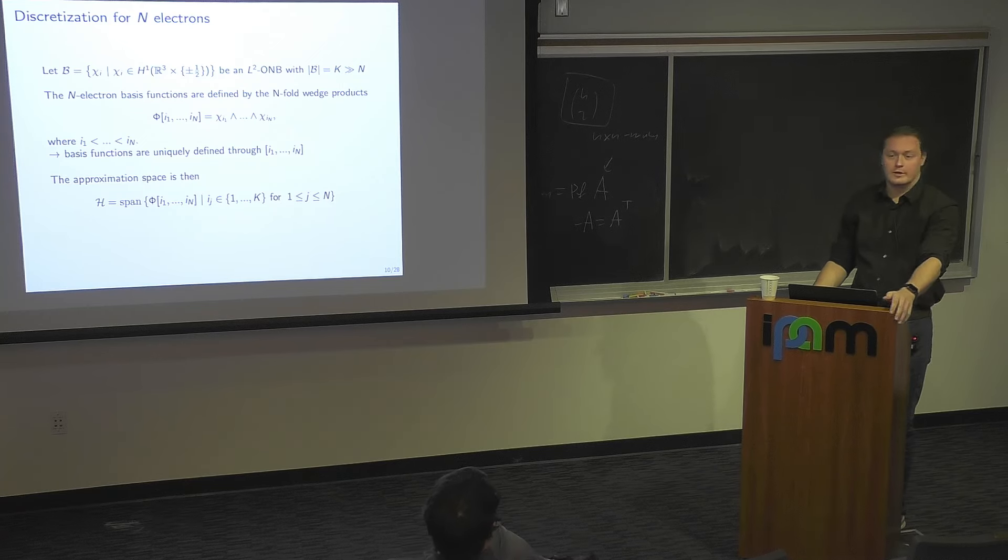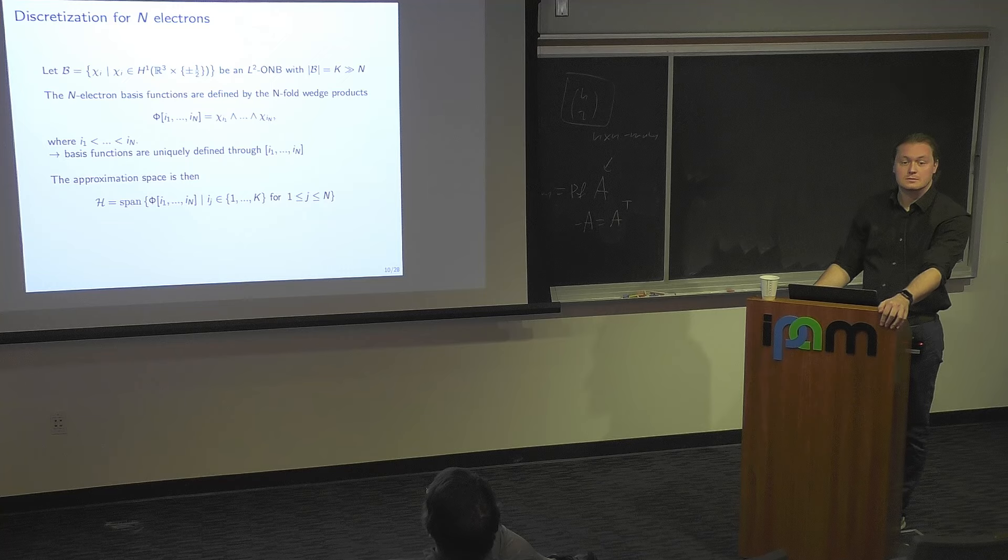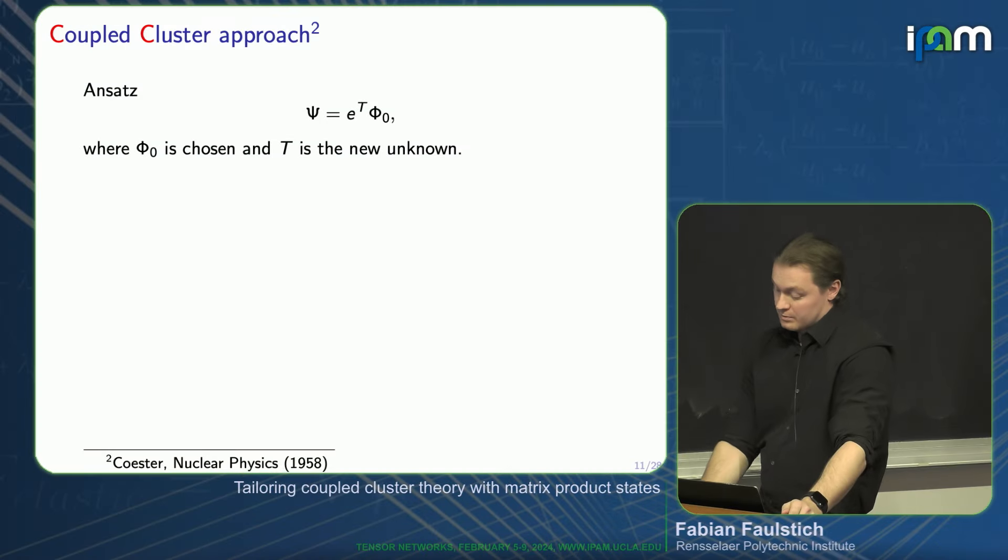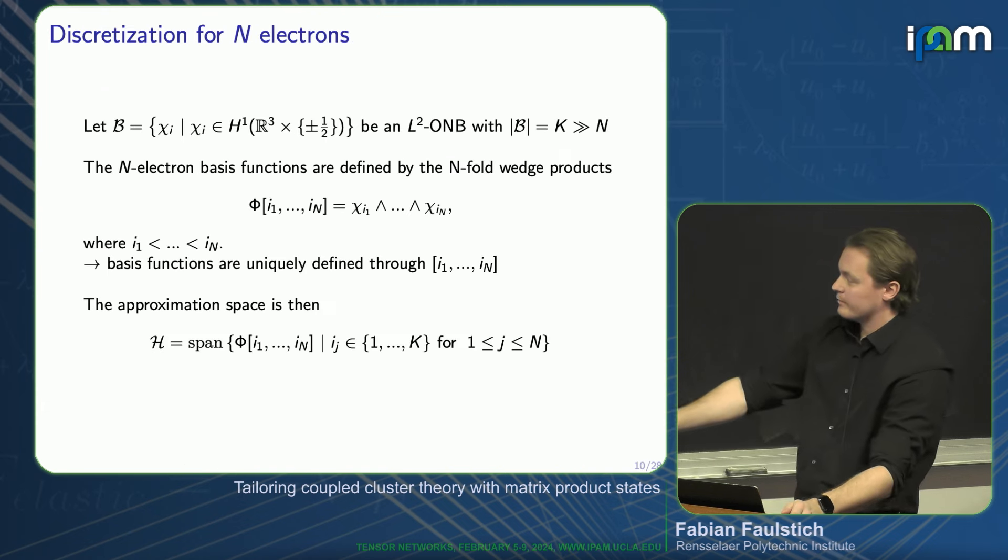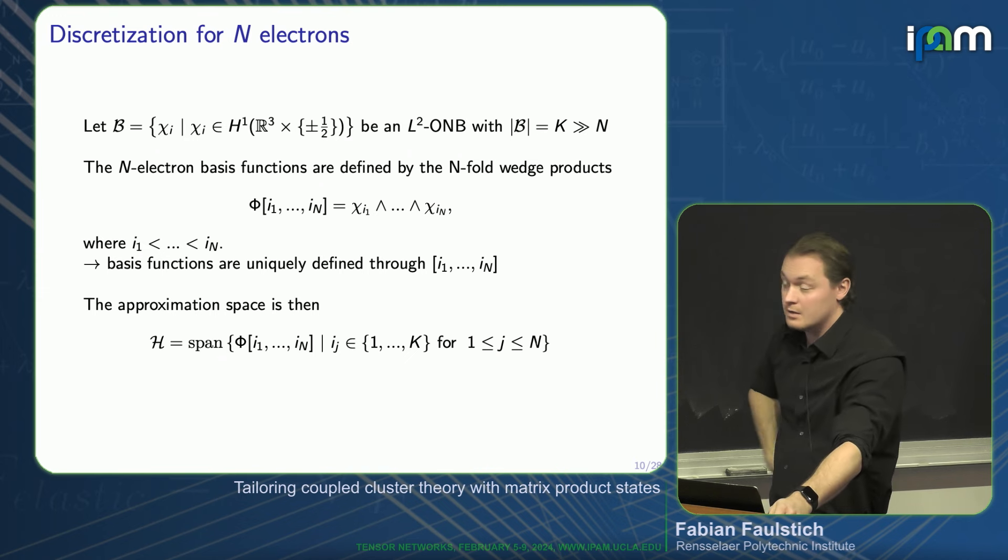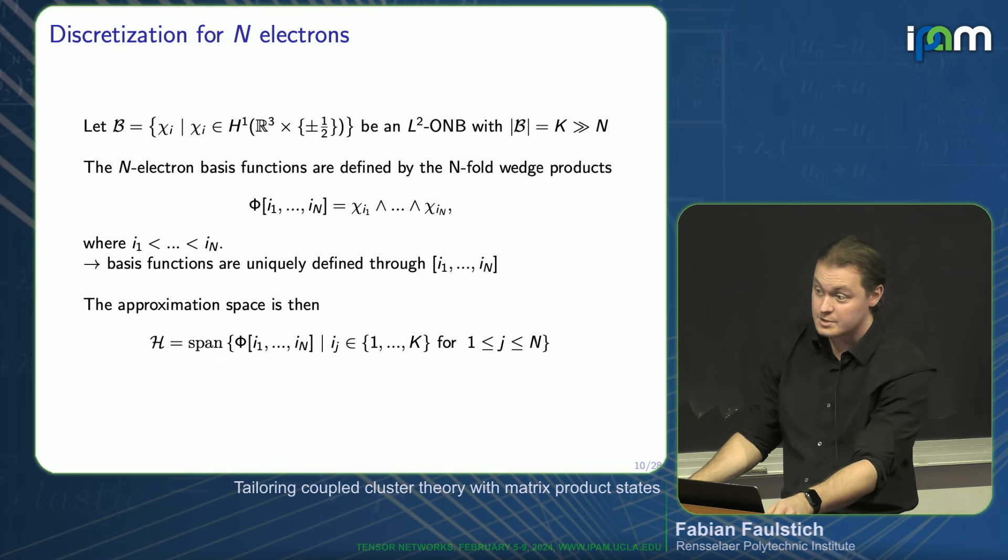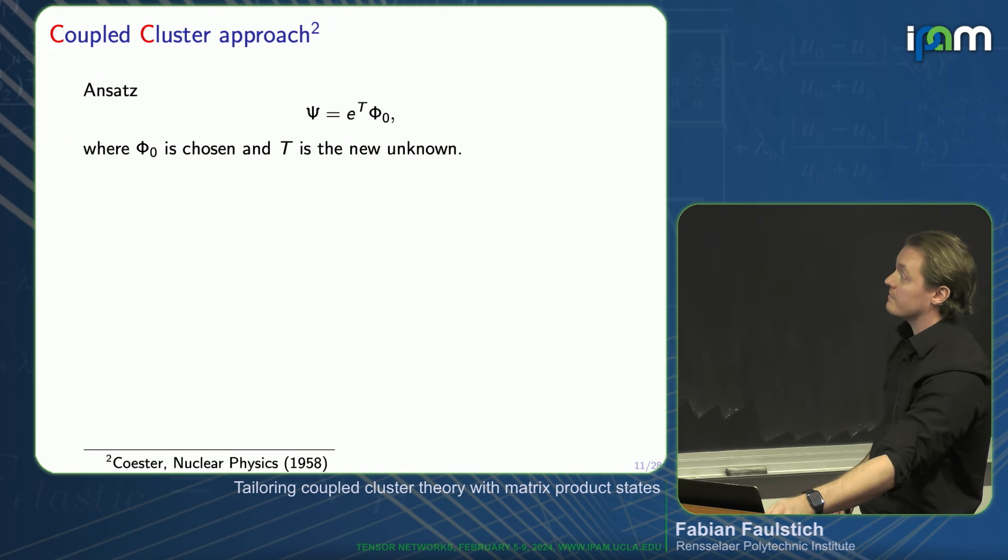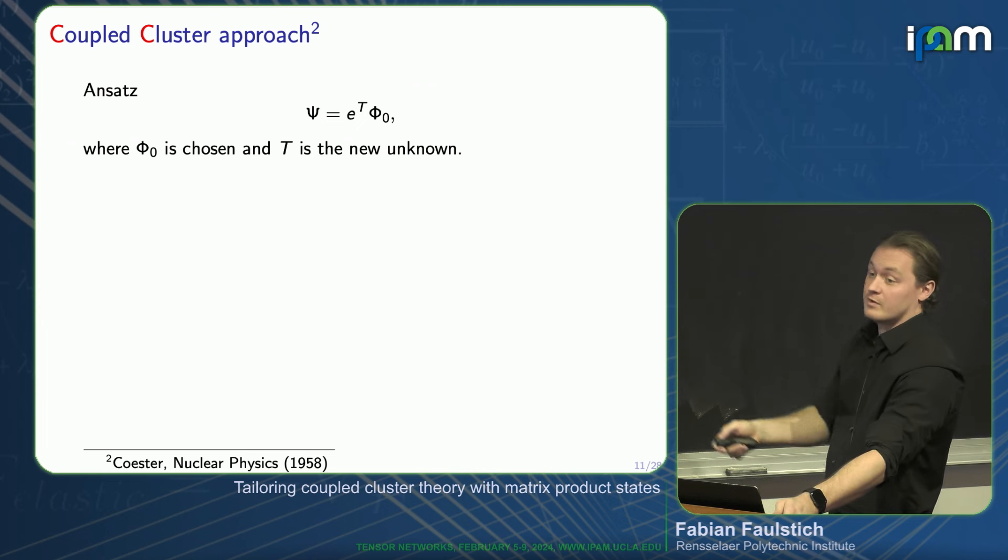Any questions regarding the construction of this Galerkin space? So now we have formed our space. If you count it carefully, we have n electrons and k single-particle functions, so I can form k choose n of these Slater determinants. This still scales pretty badly. Very rapidly, I will not be able to apply conventional numerical methods to the discretized Hamiltonian in this basis. So what we do is we form different ansatz and use different methods.